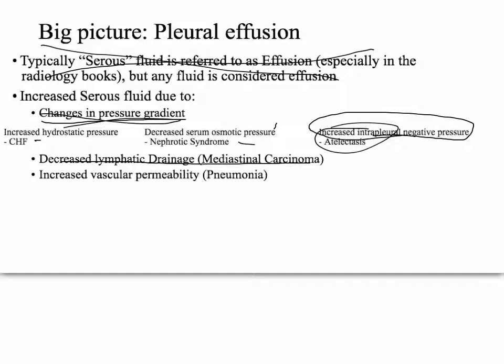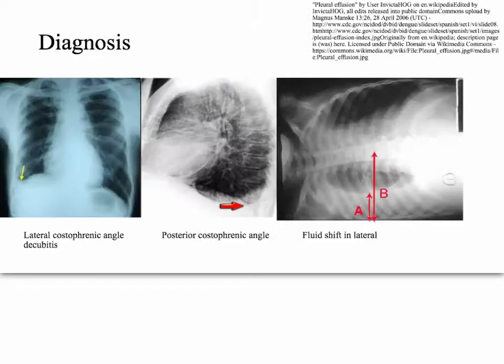Lastly, increased vascular permeability separates two different types of pleural effusion: transudative versus exudative. With increased vascular permeability, proteins get into the serous fluid — you're going to have more cellularity, more proteins, more LDH. This is seen in pneumonia, for example, where bacterial infection causes cytokine release, endothelial cells become leaky and permeable, allowing white blood cells and fluids from the blood to be more easily transferred into those spaces.